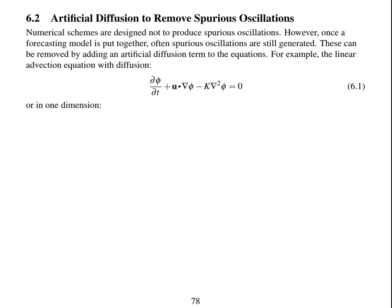So for example, if we consider the linear advection equation with diffusion, it's got rate of change of phi, then the advection term of phi, and then the diffusion of phi. You can pause the video and write this equation down in one dimension, which is the form you'd solve it if you were coding this numerical method up to experiment with it.